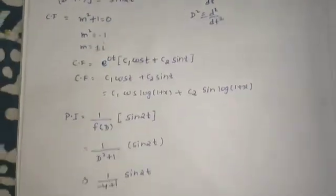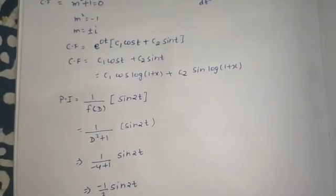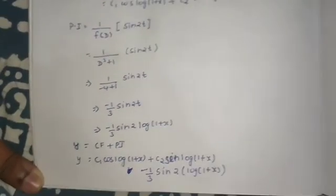The interesting thing was we substituted this as e^t and converted everything in terms of t, and then used the basic results for CF and PI you already know. Just replace that t by x and you are ready with your answer.